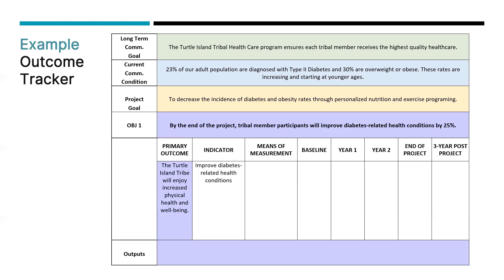You're going to include the baseline — what is your starting data point as you're beginning your project. In year one, you're going to do the same measurement for the end of year one, year two, end of project, and three-year post-project. The three-year post-project target takes into consideration your sustainability plan — this is a projection into the future, taking your sustainability plan into account.